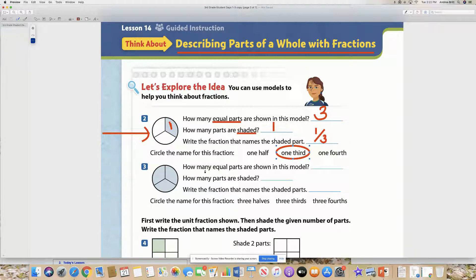Number three. How many equal parts are shown in this model? How many equal parts do we have here? Perfect. We have three equal parts. How many parts are shaded?